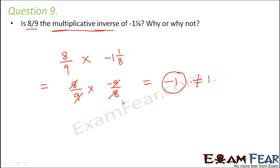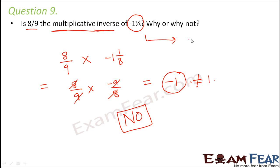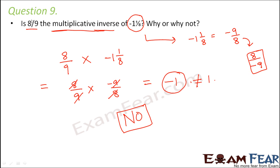Since their product is not equal to 1, 8/9 is not the multiplicative inverse of -1⅛. The number -1⅛ is the same as -9/8, so its correct multiplicative inverse would be 8/(-9), i.e., the minus sign is missing — that is why 8/9 is not the multiplicative inverse.